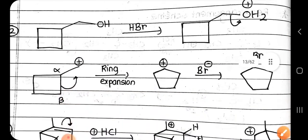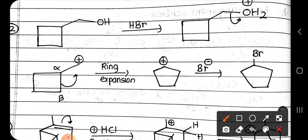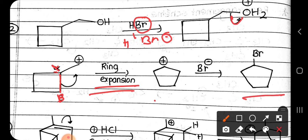Now let us see the second example. Similarly, acidic medium is provided, the oxygen gets protonated, and water leaves to form the carbocation. This is the alpha bond and this is the beta bond. We know that four-membered rings are quite unstable, so the alpha-beta bond breaks, and at the alpha position the carbocation is formed. Since the four-membered ring breaks, ring expansion occurs and we get a five-membered ring with a carbocation. Since HBr is the acid used, Br⁻ acts as a nucleophile and attacks to give the final product. Whenever there is a chance of ring expansion to a more stable ring, the ring expansion will occur.